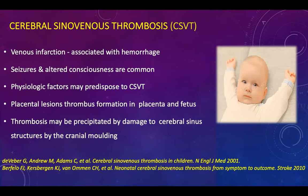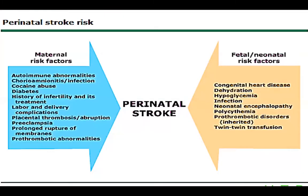Cerebral sinovenous thrombosis is associated with hemorrhage and presents as seizures and altered consciousness. Physiological factors may predispose to it, and thrombosis may be precipitated by damage to cerebral sinus structures at the time of birth by cranial molding and pressure on the skull. If superimposed by sepsis, infection, hypoxemia, or ischemia, it can lead to a catastrophic outcome.